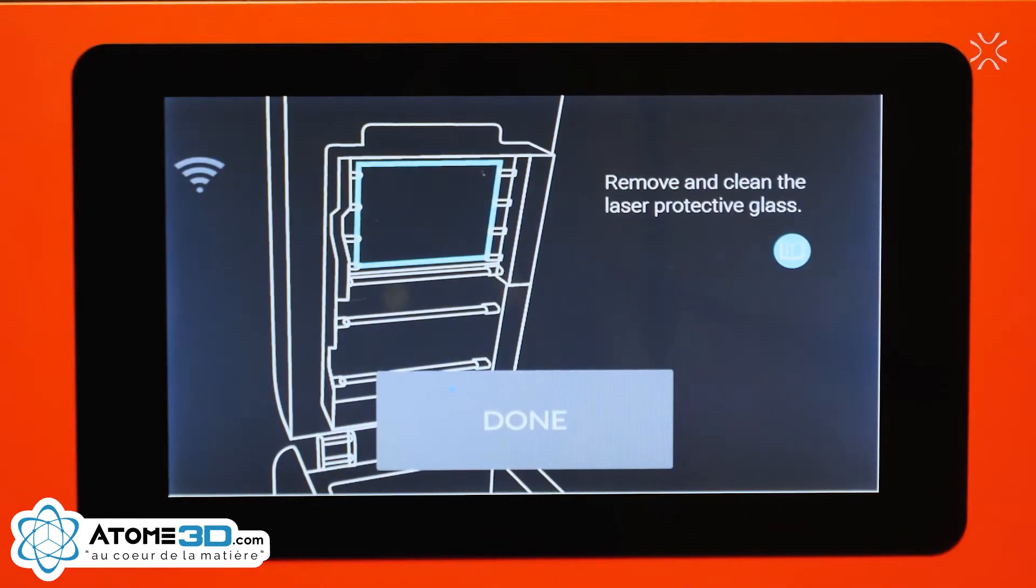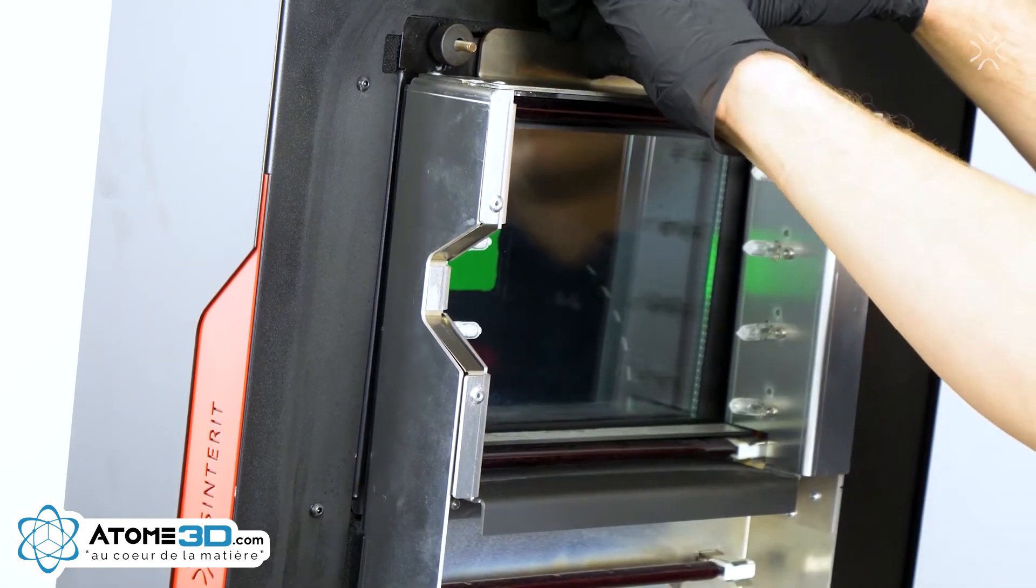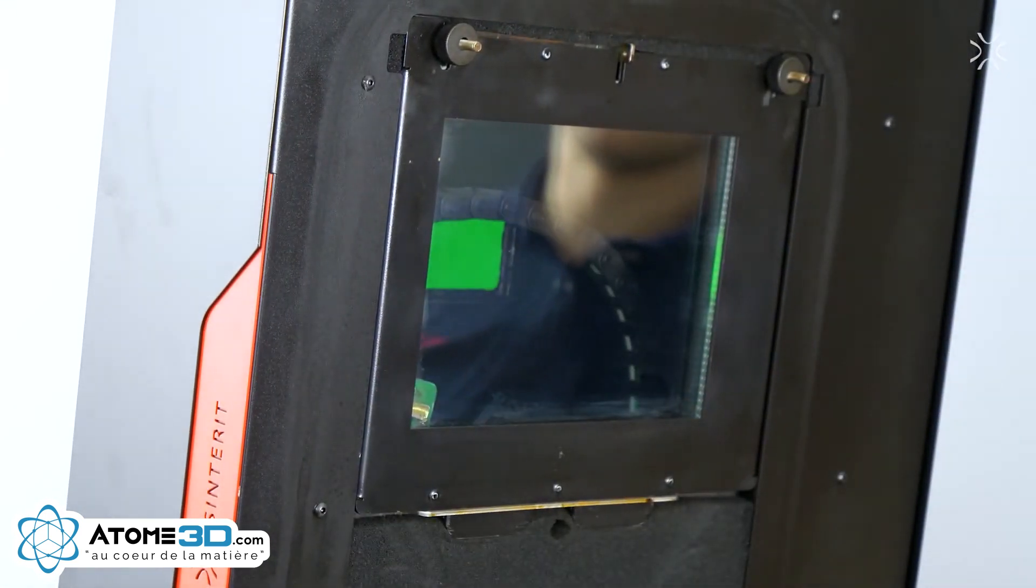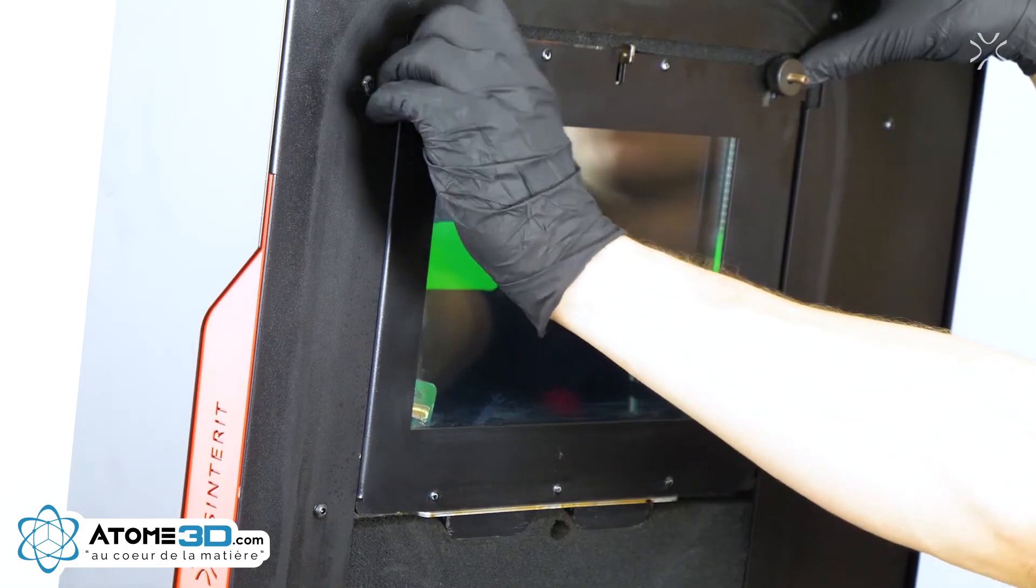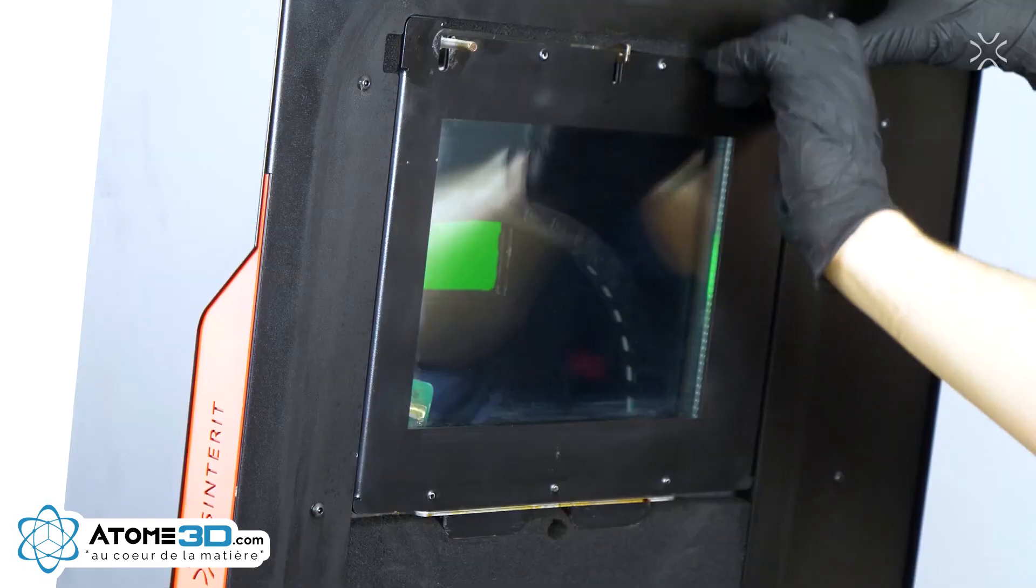In the next step, you should remove and clean the laser protective glass. To do so, remove the split pin from the heating module. Lower the heating module to get access to the laser protective glass. Unscrew both quick-release nuts and remove the laser protective glass from the locking holders.